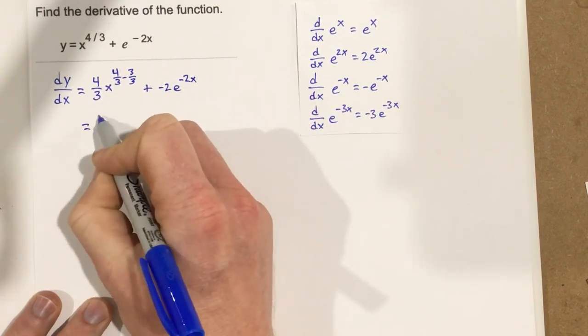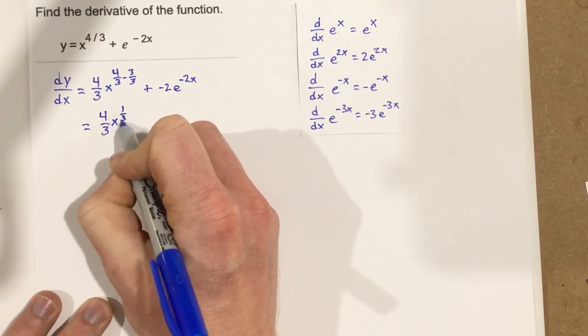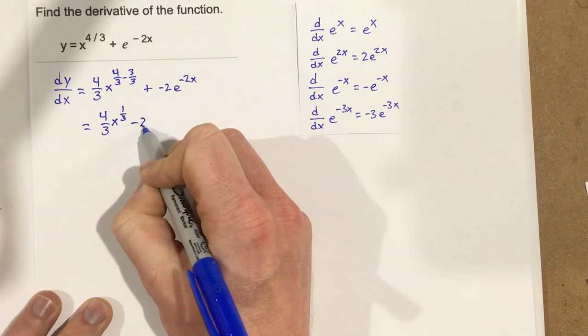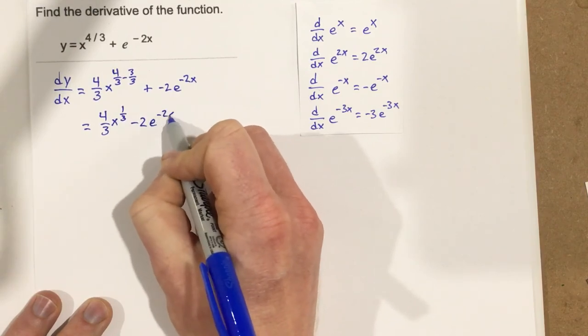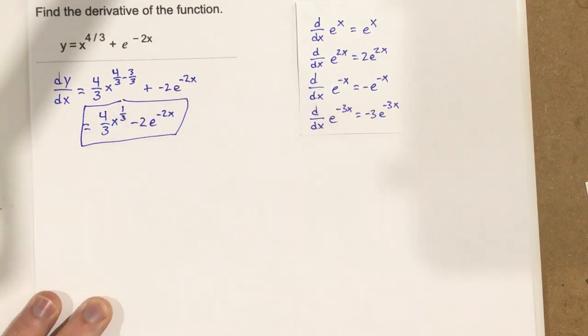If I simplify those, that's four-thirds x to the one-third minus two e to the negative 2x. So this is the derivative of y with respect to x.